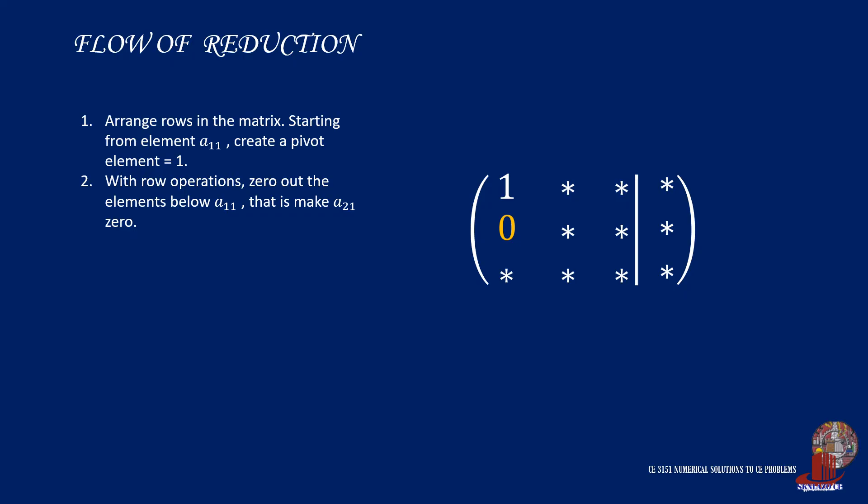At this stage, element A21 has been zeroed out. Step 3 is similar with the previous step, as we must zero out element A31, and this is also by using the pivot element A11.